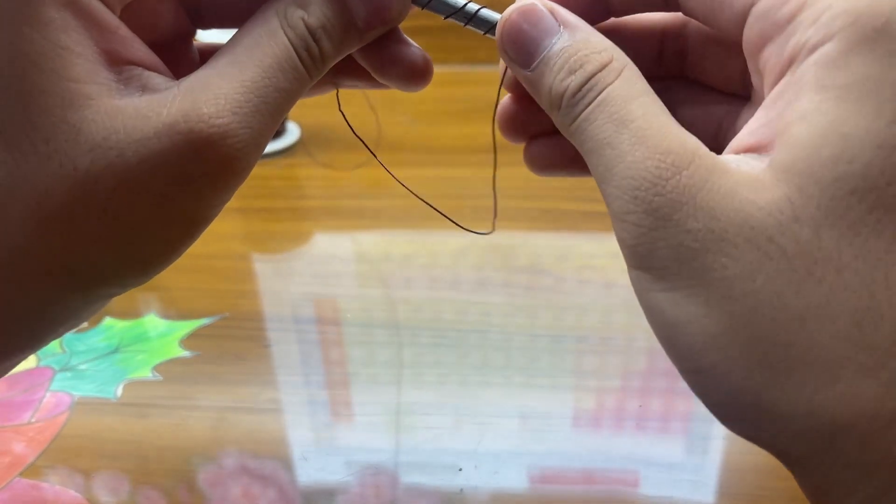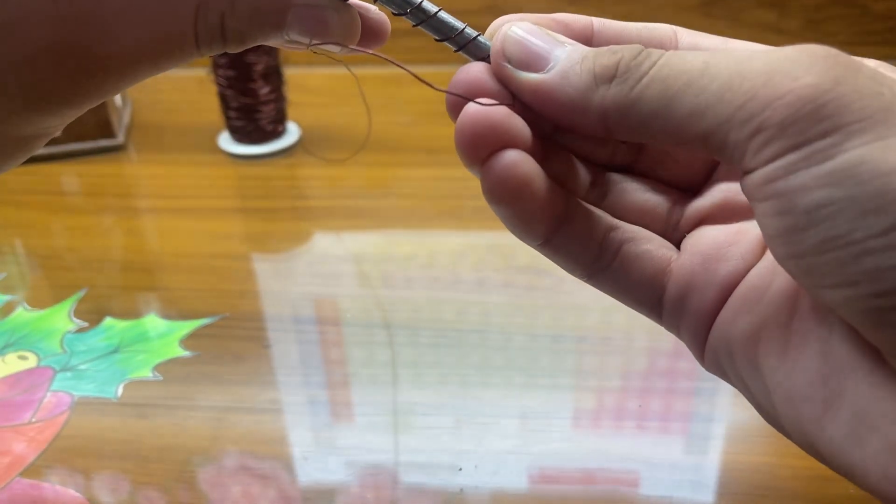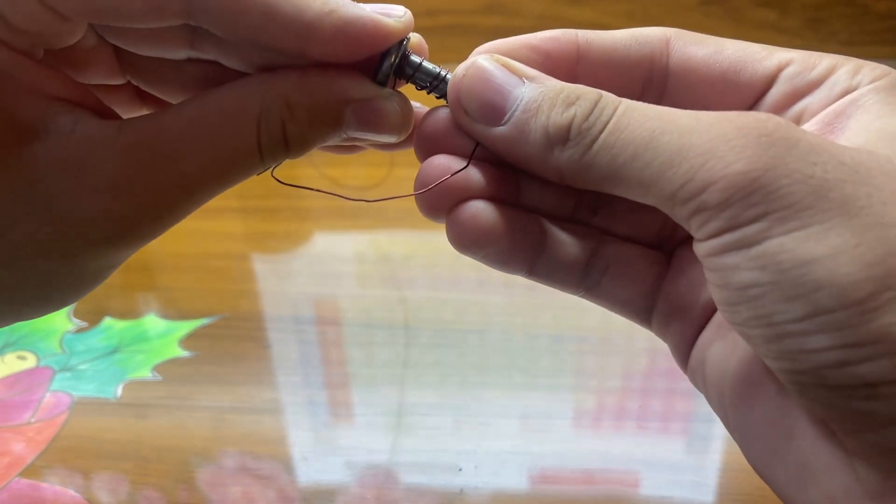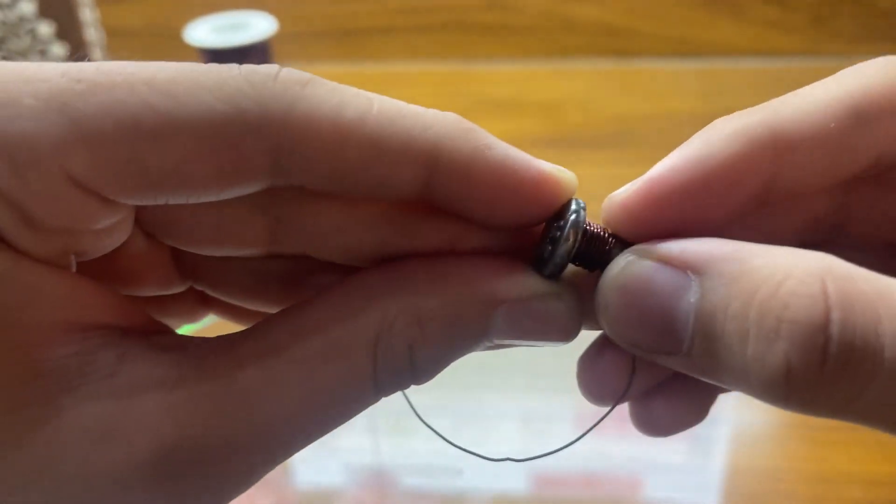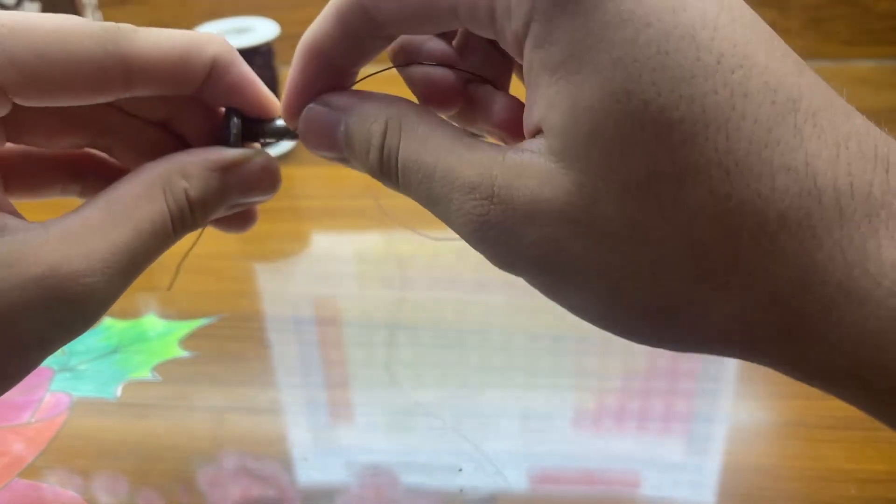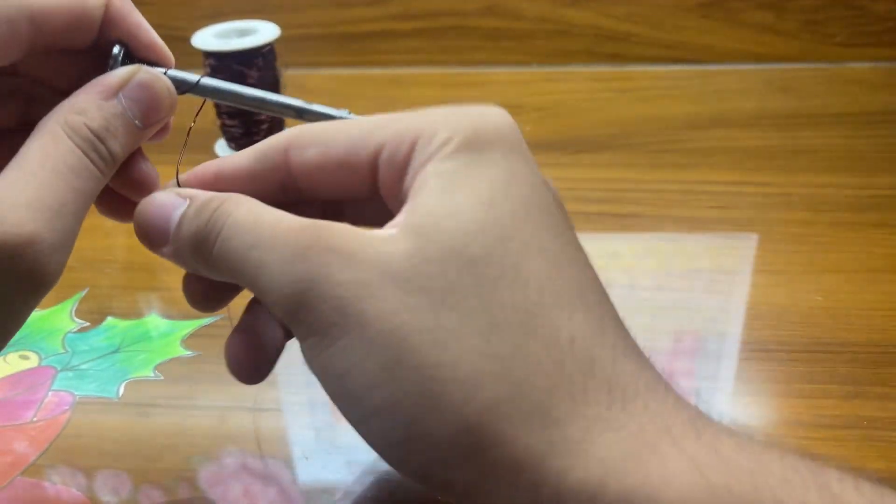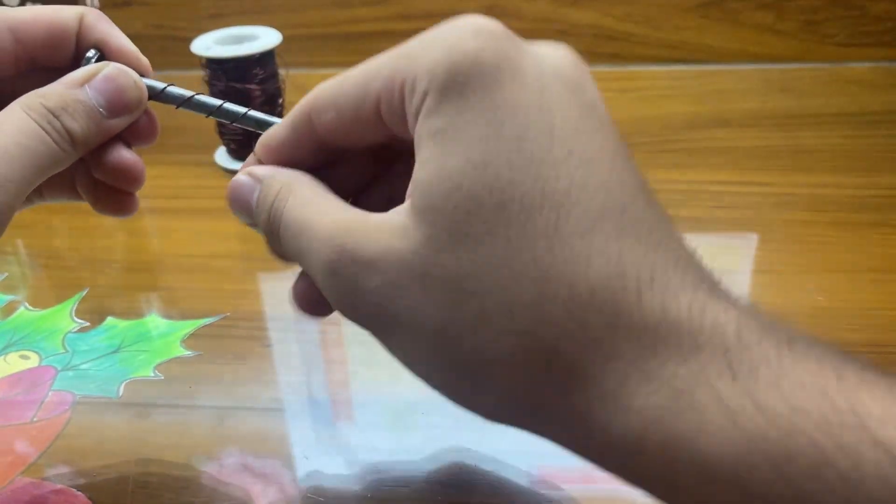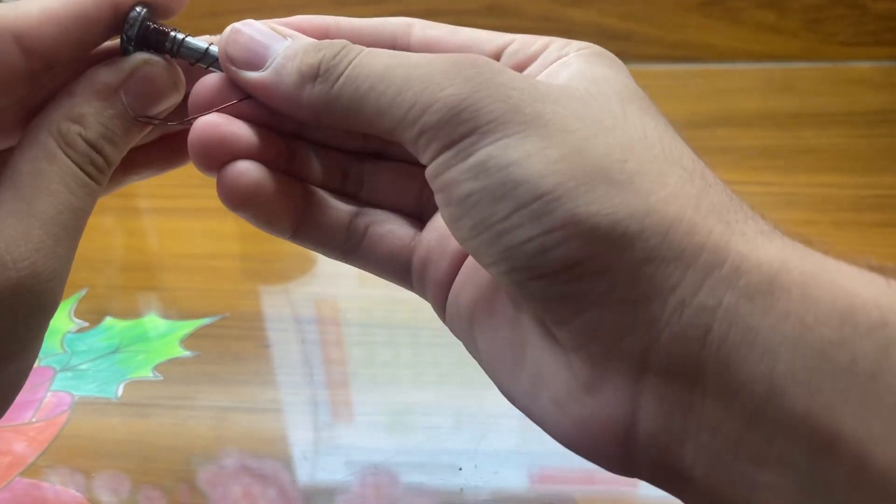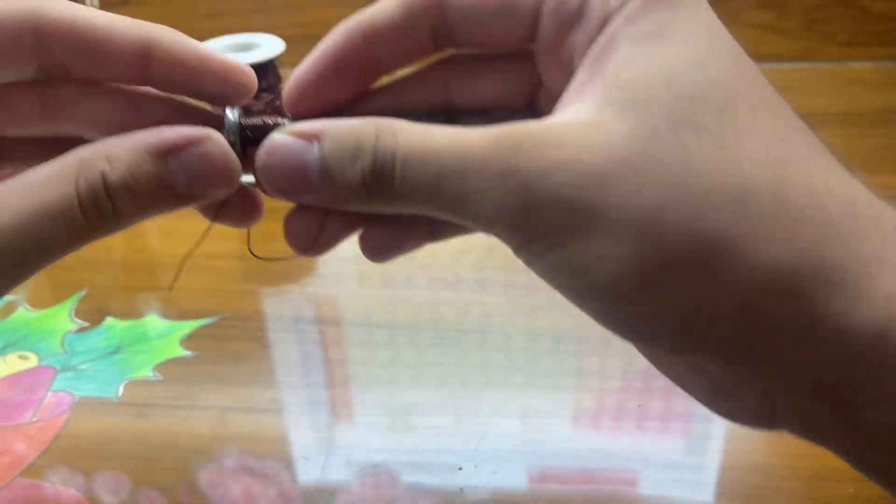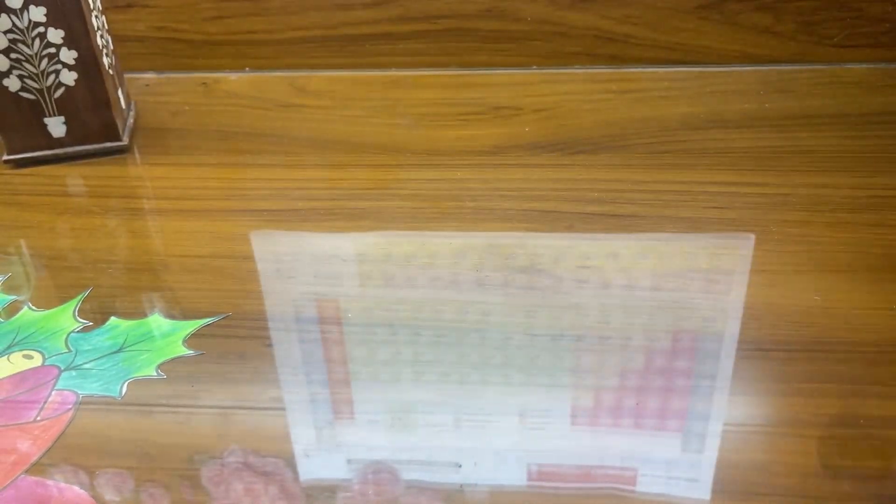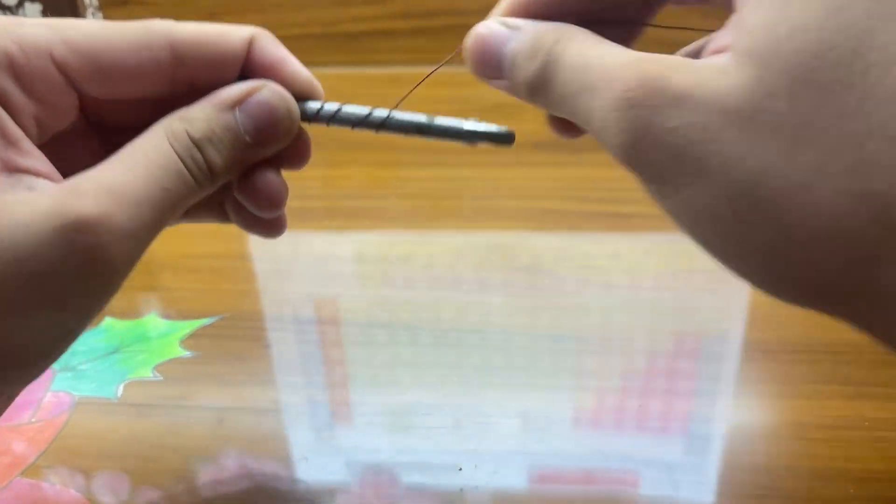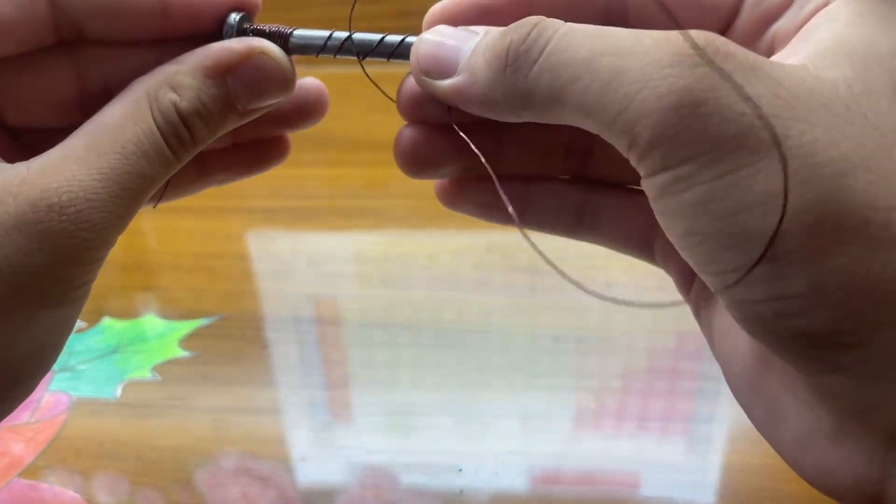Once you reach that point, just tightly hold it in and then push the wire in so it becomes nice and compact. We're going to repeat this process over and over again until our whole iron nail is fully covered with copper wire. We're just going to be winding the wire again, winding it back on and pushing it in.